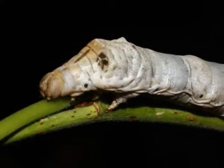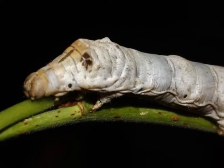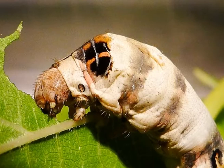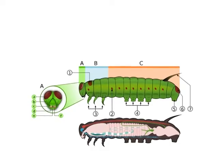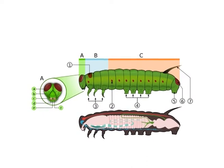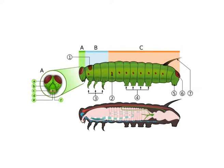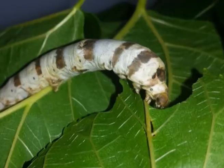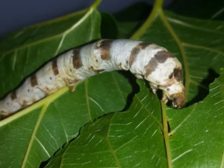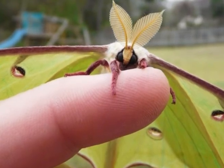The thin elastic chitinous cuticle permits rapid growth of the larvae during any instar. The larval head consists of 6 body segments fused together with a cranium. The second, fourth, fifth and sixth segments carry appendages which are modified into antennae, mandibles, maxillae and labium respectively. The median epicranial suture is well developed and prominent in silkworm larvae. On the outside, the clypeus and the labrum are also prominent.